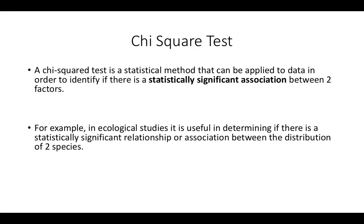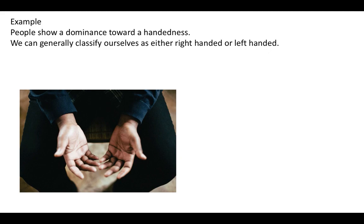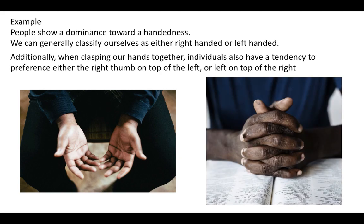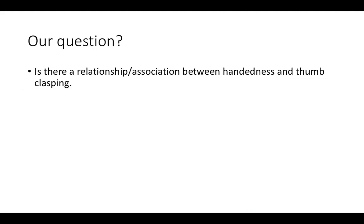Let's start working through our example. One thing that we notice in people is that they tend to show a dominance towards handedness. We generally classify people as being left-handed or right-handed depending on the dominance and the use or preference of one of those hands. Another thing we can see in a population is that when clasping our hands together, people tend to have a preference for which thumb sits on top. So does the right thumb sit on top of the left, or does the left sit on top of the right? Based on these observations, we ask a question: is there a relationship or an association between handedness and thumb clasping?